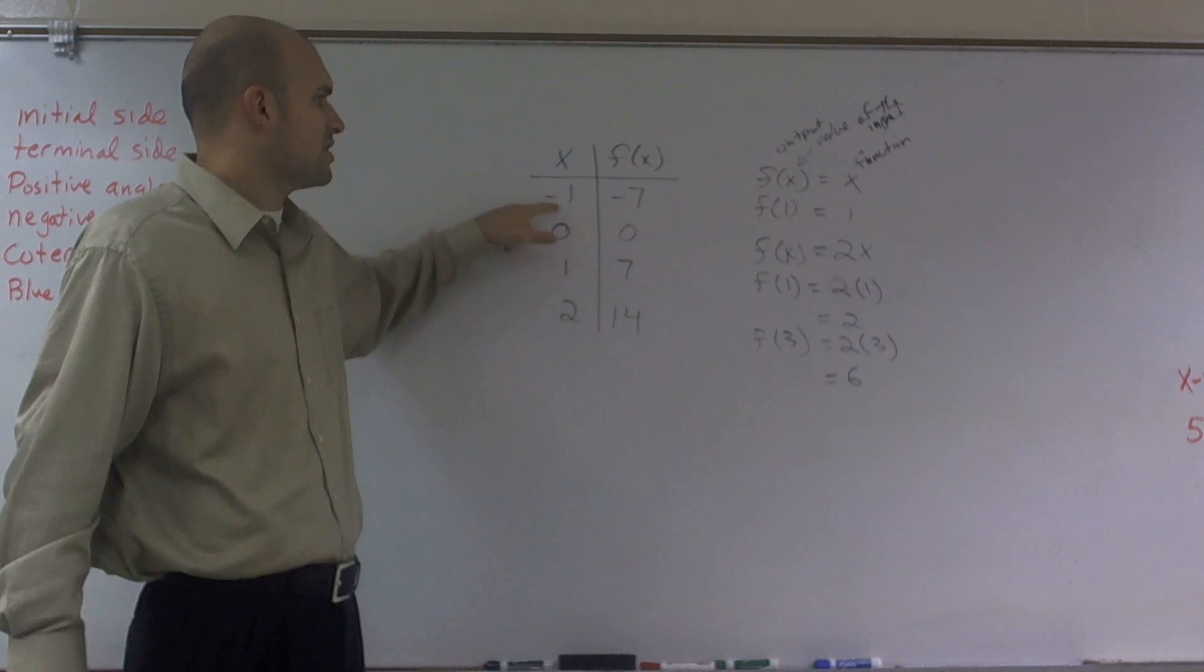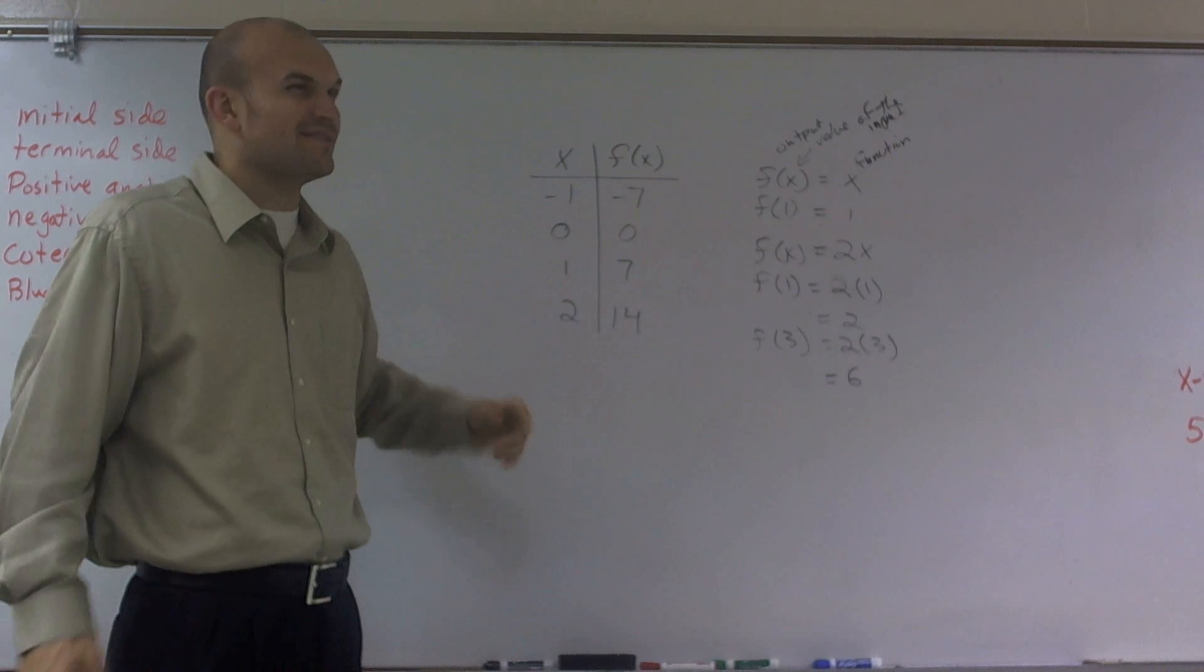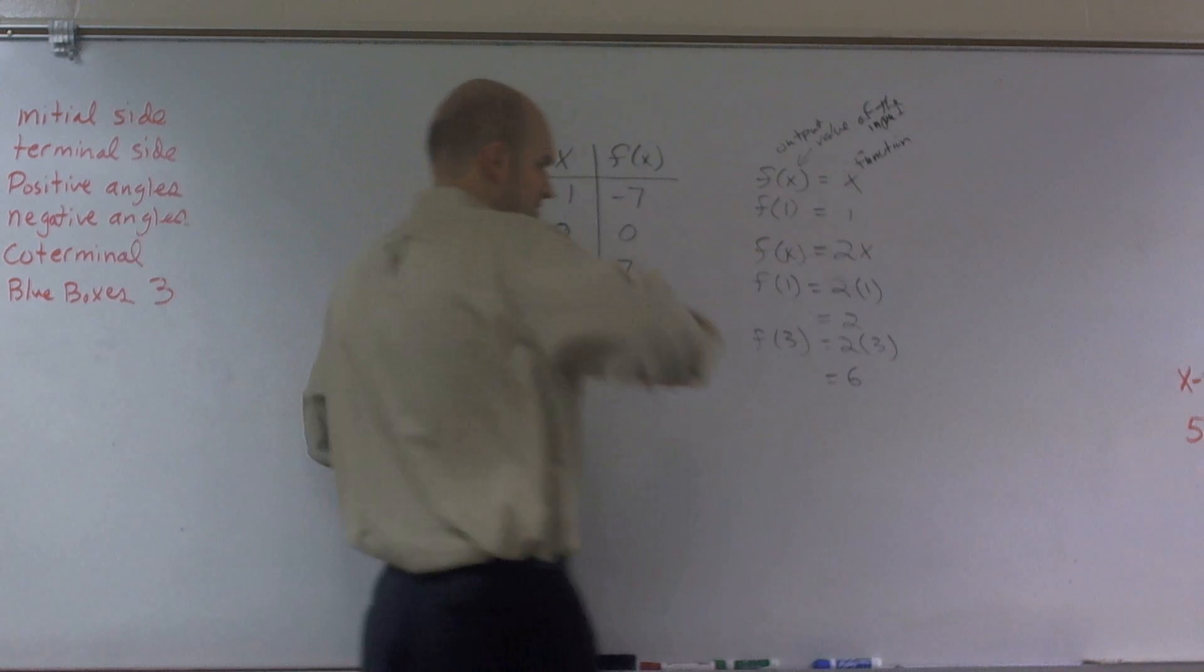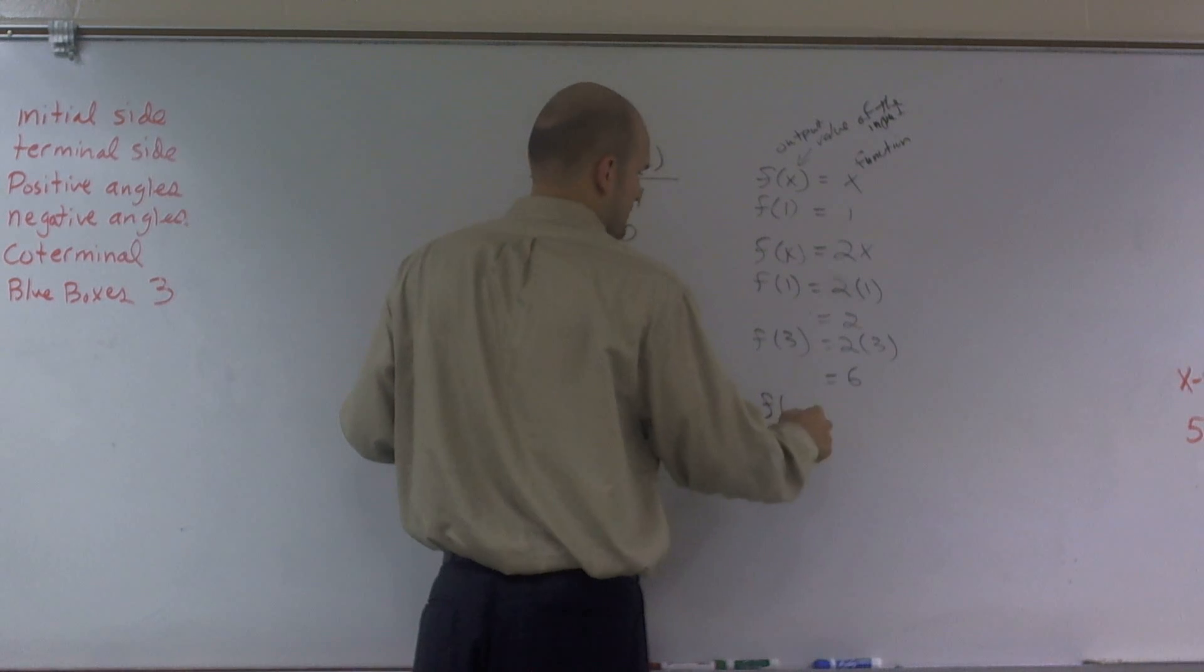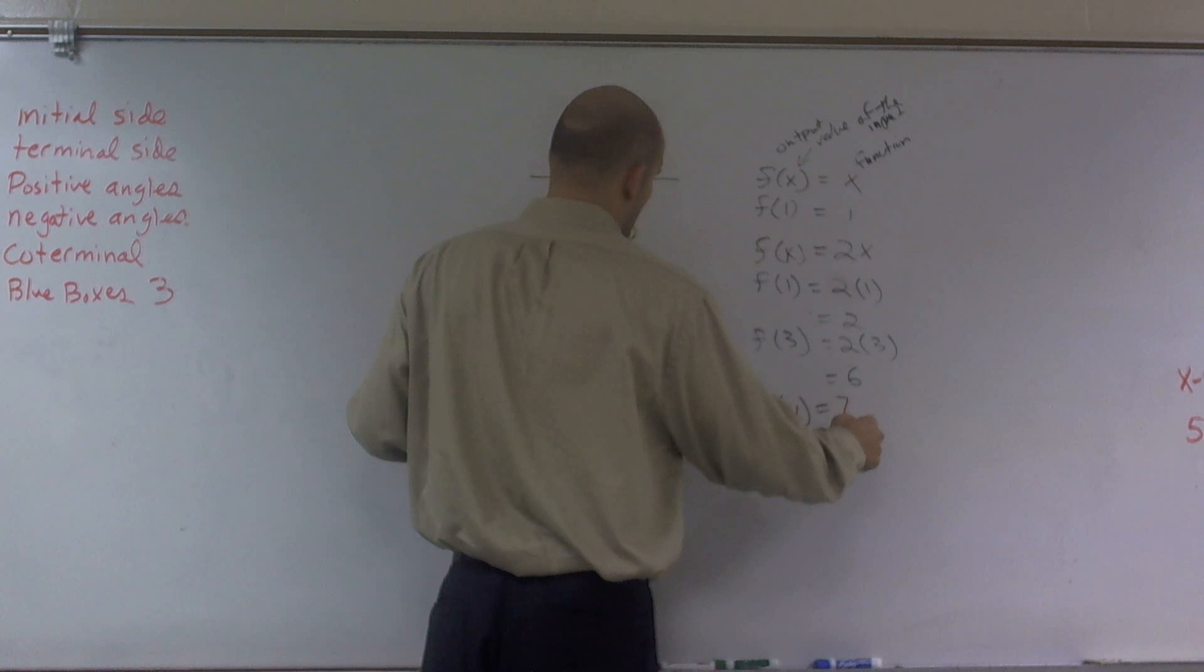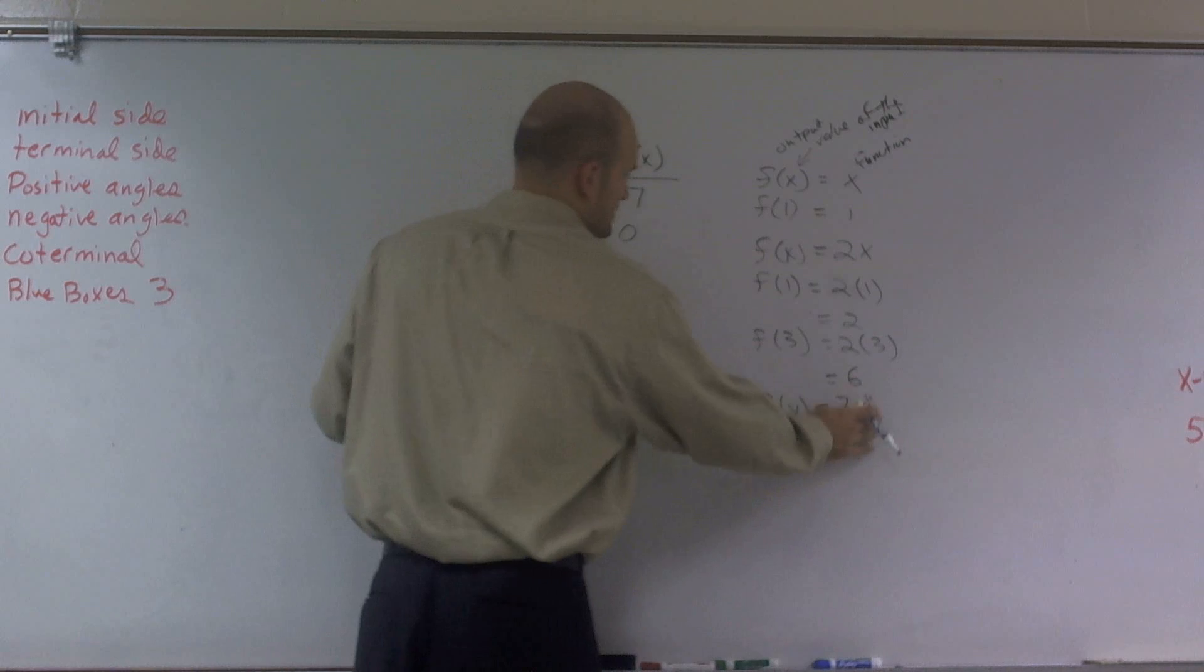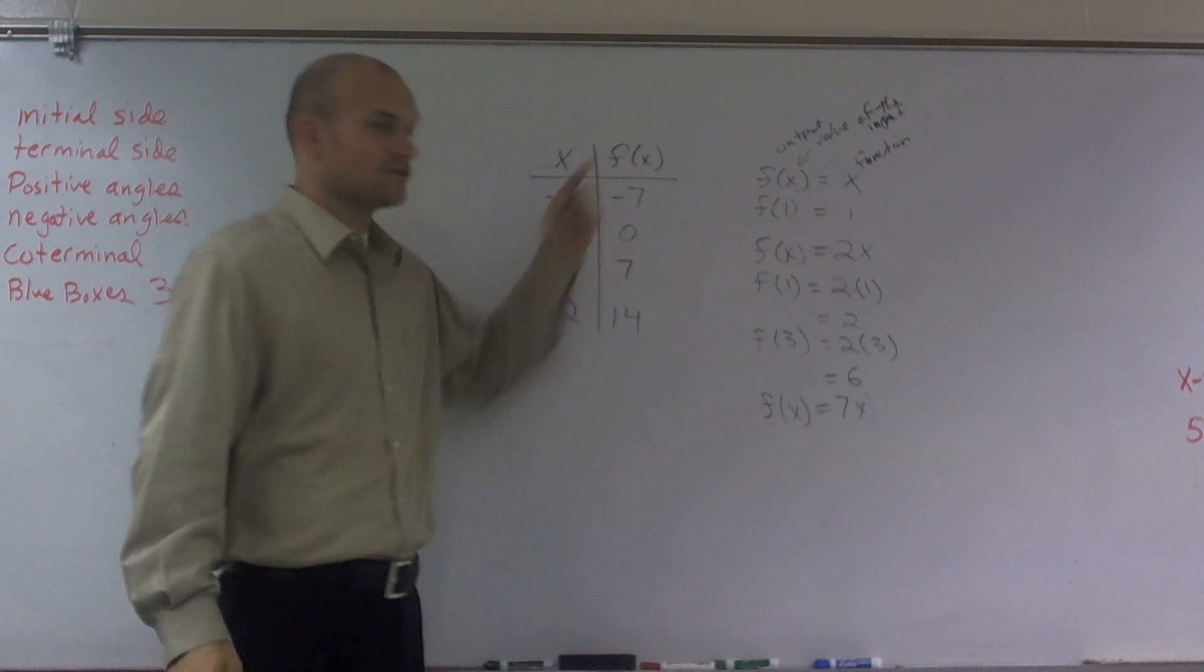What do I have to multiply by negative 1 to give me negative 7? You say, well, you can multiply by 7, right? So we could say f of x is equal to 7 times x, or just 7x. So we know that works for the first equation.